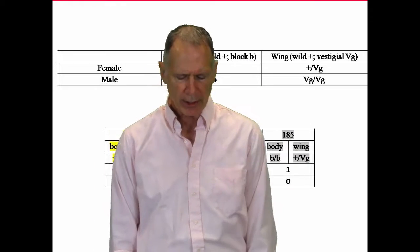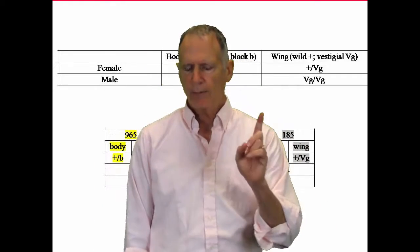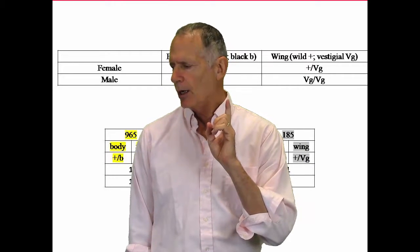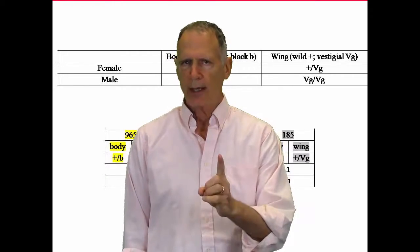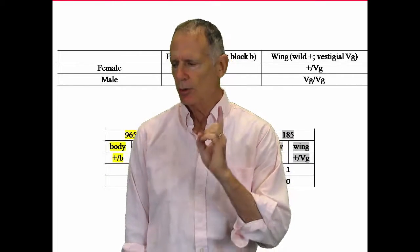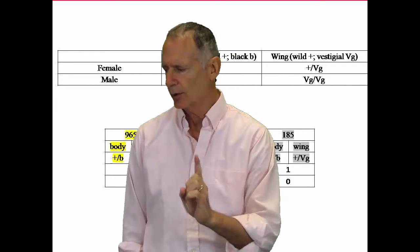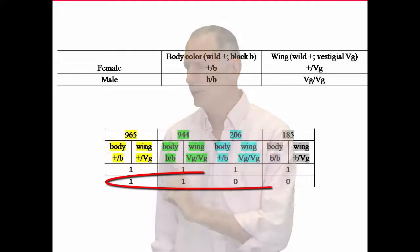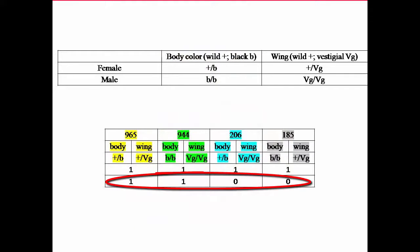So there's some mixing going on. If the traits are on a single chromosome, if both traits are on a single chromosome, then you would expect to get a ratio of one to one, and you would get only wild types in the first case and the recessive traits.